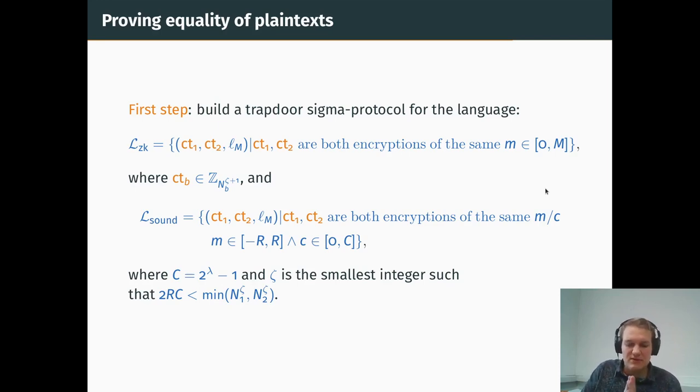So what we want to build in particular, it is a trapdoor sigma protocol for the language of ciphertexts that encrypt the same message, m, but over different moduli, N_1 and N_2. In the case of the soundness language, since we are considering gap languages, it is simply that we are encrypting not only an integer message, but we are encrypting a rational which belongs to, where the numerator and denominator belongs to this range. Of course, ζ must correspond to some particular choice, minimizing the modulus, but still allowing for correct decryption at the end.